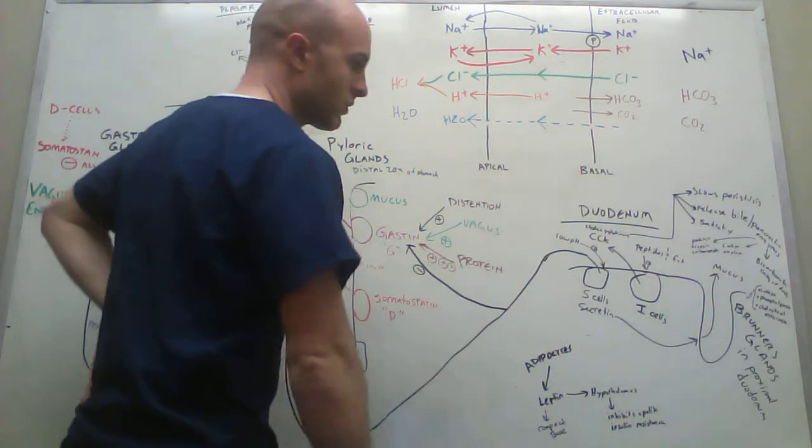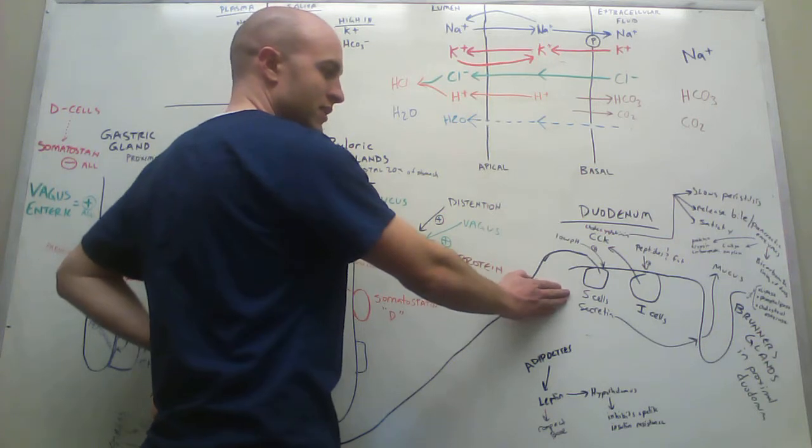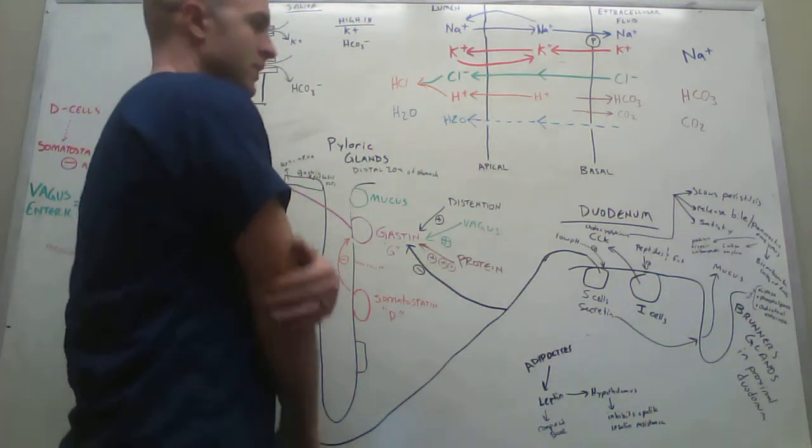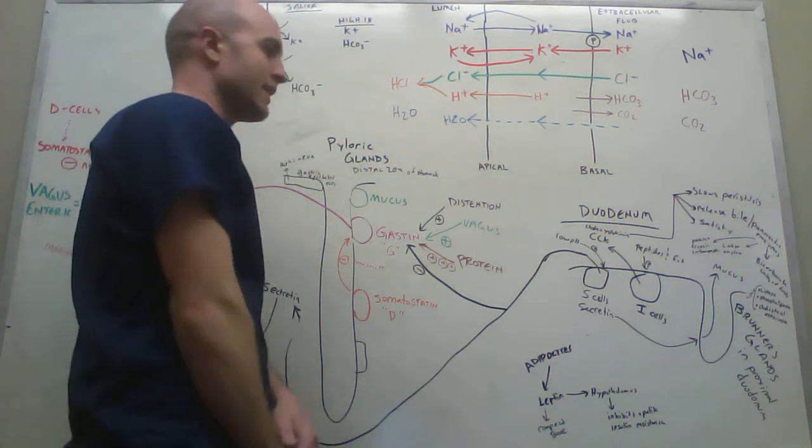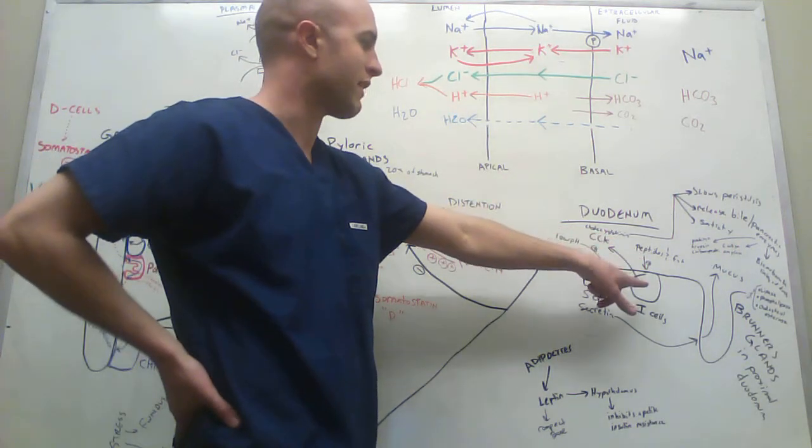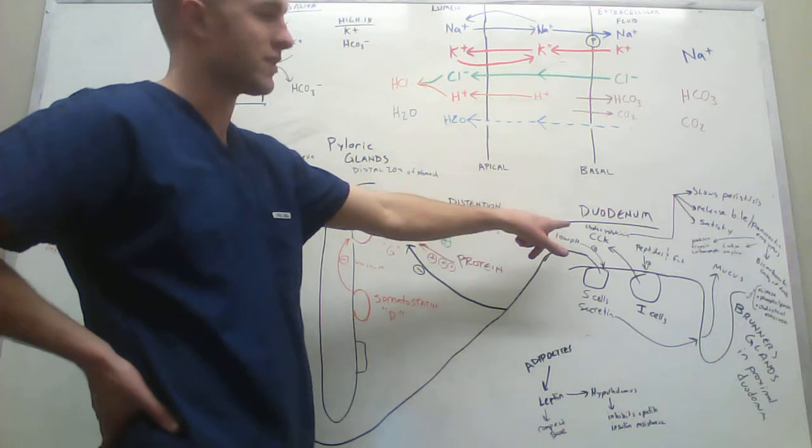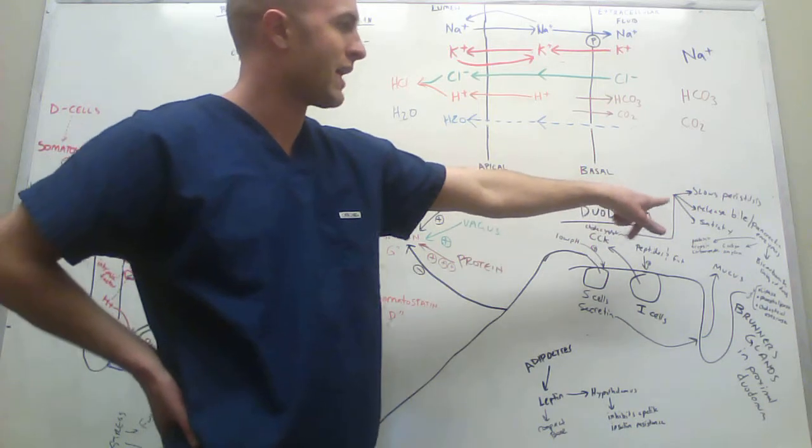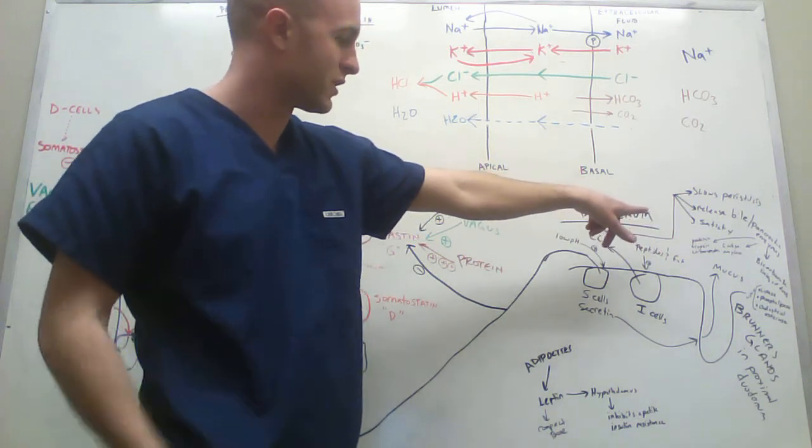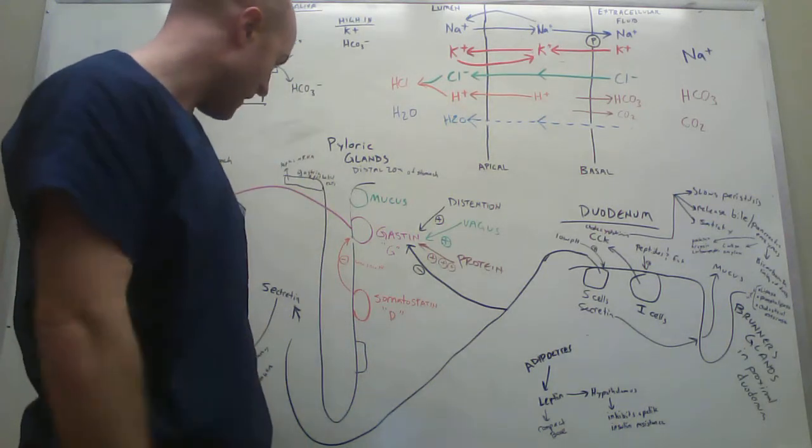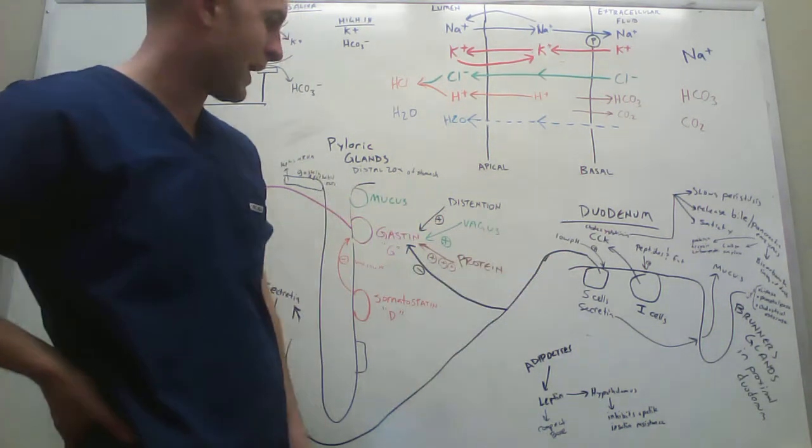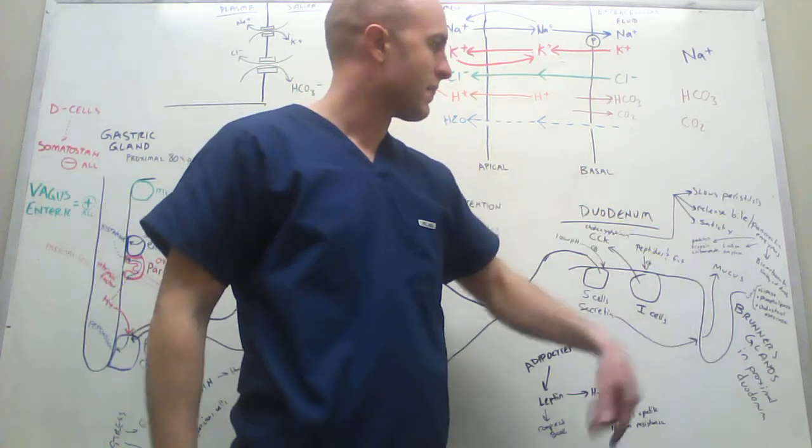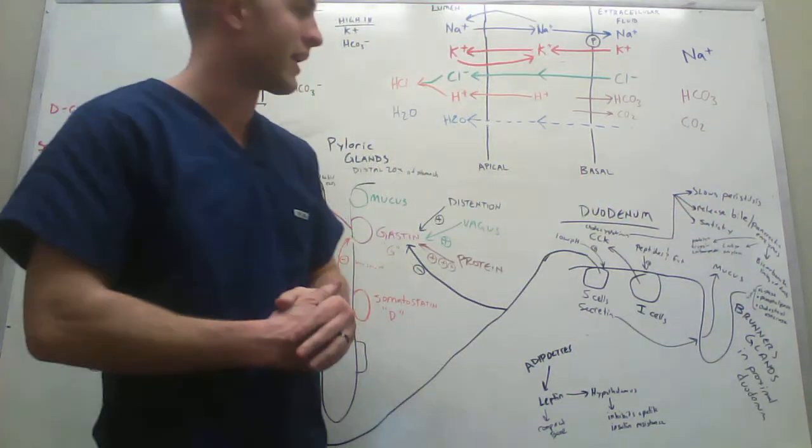If we go down into the duodenum, you get even more cells. We have these S cells and I cells. The I cells are going to release cholecystokinin in response to peptides and fat. Cholecystokinin does a lot of things: it slows peristalsis, releases bile, makes you have a feeling of satiety, and causes the release of bile and also pancreatic enzymes.